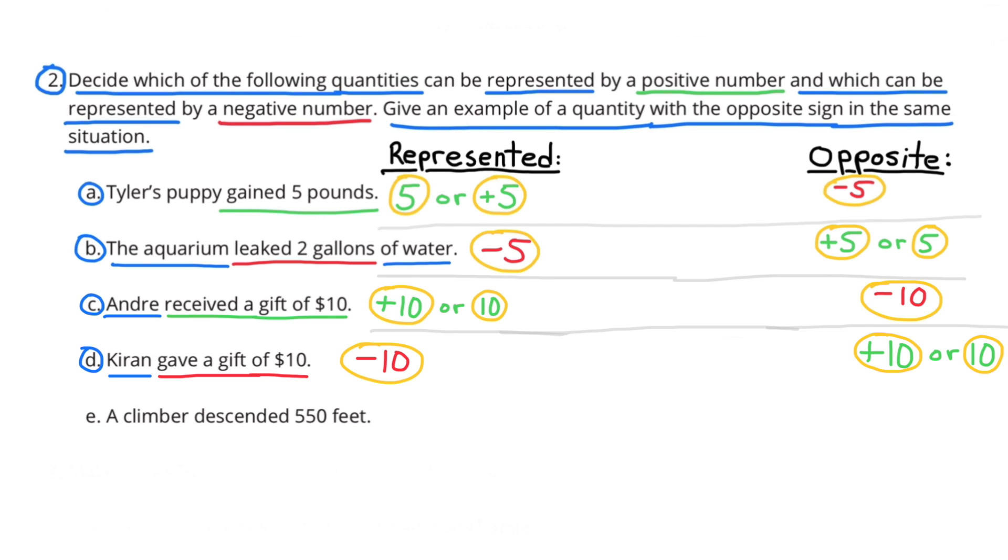D. Kieran gave a gift of $10. Giving a gift of $10 would be negative 10 and the opposite of negative 10 is positive 10.